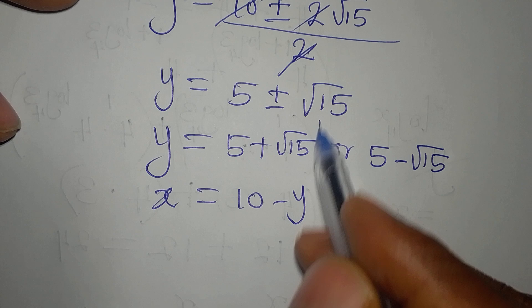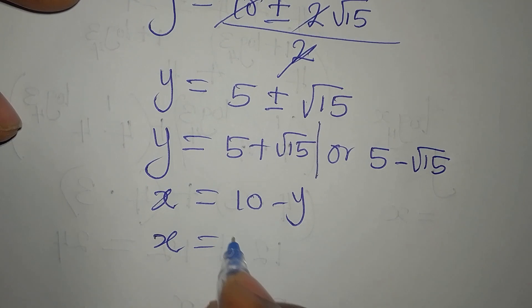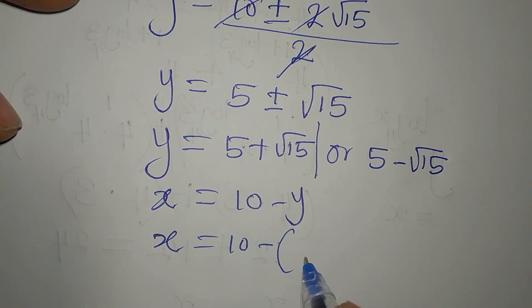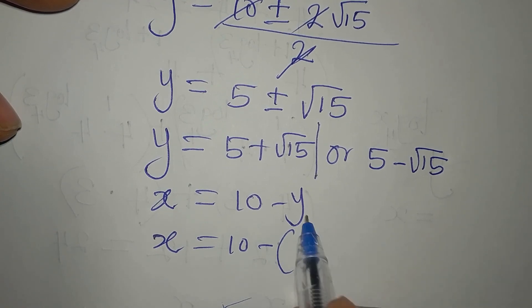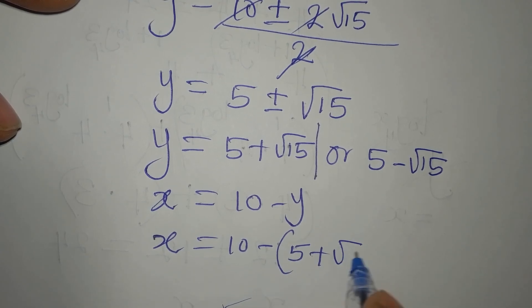Now, let us use this value of Y. This particular one. So X will now be 10 minus open bracket. You must open the bracket because whatever we have now stands for the Y. So we write 5 plus root 15.